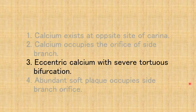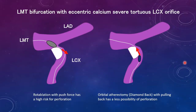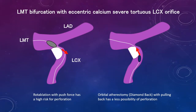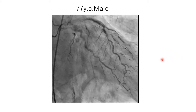The third case is eccentric calcium with severe tortuous bifurcation. This figure shows a left main trunk bifurcation with eccentric calcium and severe tortuous LCX orifice. In this situation, rotablation with a push force has a high risk for perforation. Orbital atherectomy with the Diamondback using a pull-back technique has less possibility of perforation.